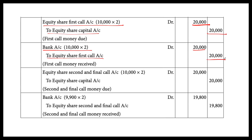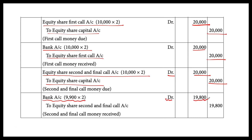For the second and final call at Rs 2 per share: Equity Share Second and Final Call Account debit Rs 20,000, credit Equity Share Capital. However, only 9,900 shares paid — 9,900 into 2 = Rs 19,800. So Bank Account debit Rs 19,800, to Equity Share Second and Final Call Account credit Rs 19,800.